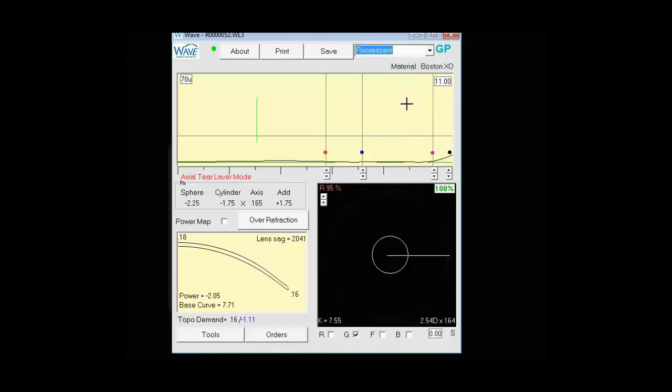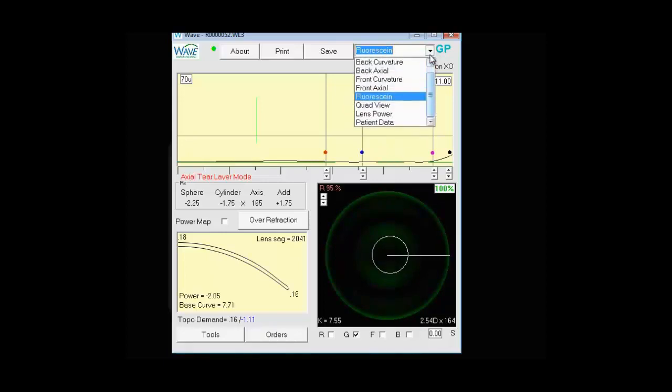If you want to see a larger fluorescein. And it's important to note on the larger fluorescein, you'll have control over how much fluorescein you'll be seeing under there. And back to quad view, and then there's lens power and patient data.